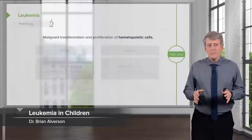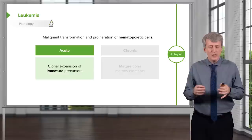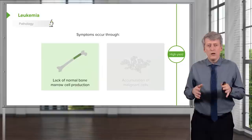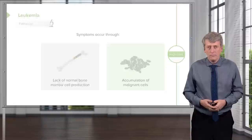In this lecture, we will review leukemia in children. Leukemia is the malignant transformation and proliferation of hematopoietic cells. We have acute leukemia, which is a clonal expansion of immature precursors, and chronic leukemia, which involves mature bone marrow components becoming clonal. Symptoms can occur from a lack of normal bone marrow cell production or from accumulation of malignant cells in tissues that otherwise shouldn't have them.